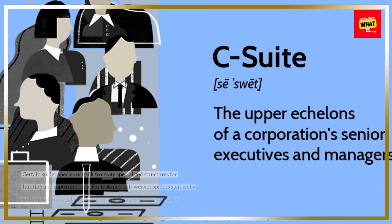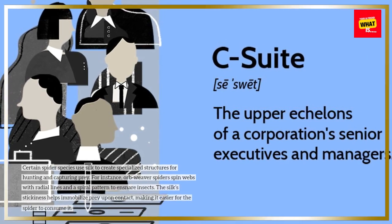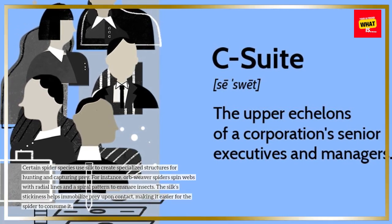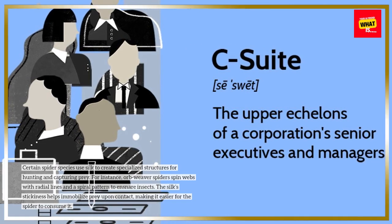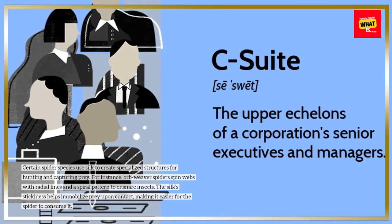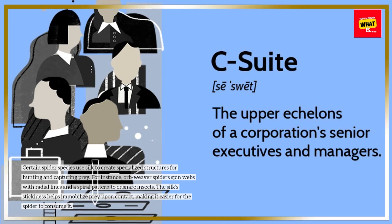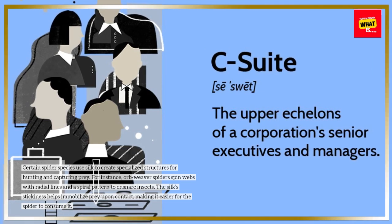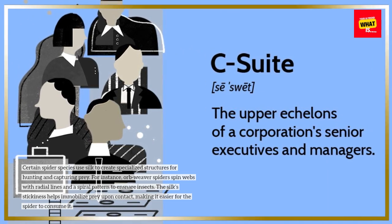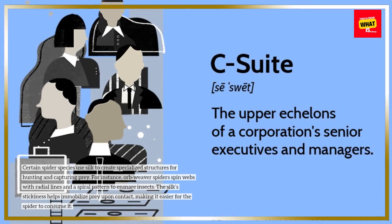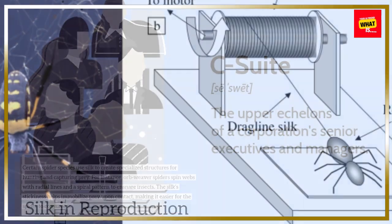Certain spider species use silk to create specialized structures for hunting and capturing prey. For instance, orb weaver spiders spin webs with radial lines and a spiral pattern to ensnare insects. The silk's stickiness helps immobilize prey upon contact, making it easier for the spider to consume it.